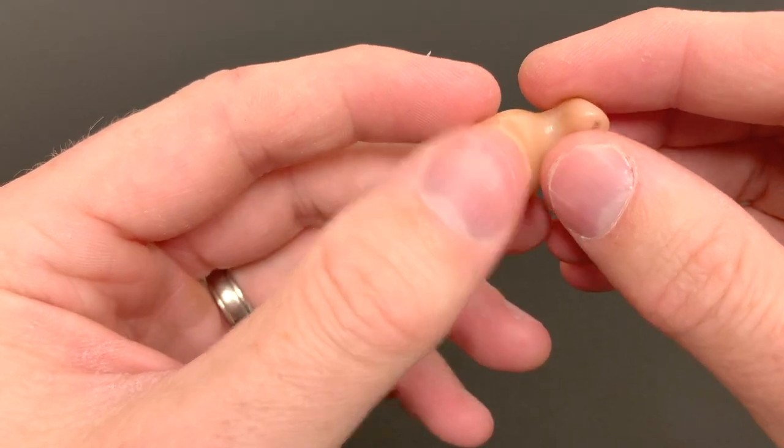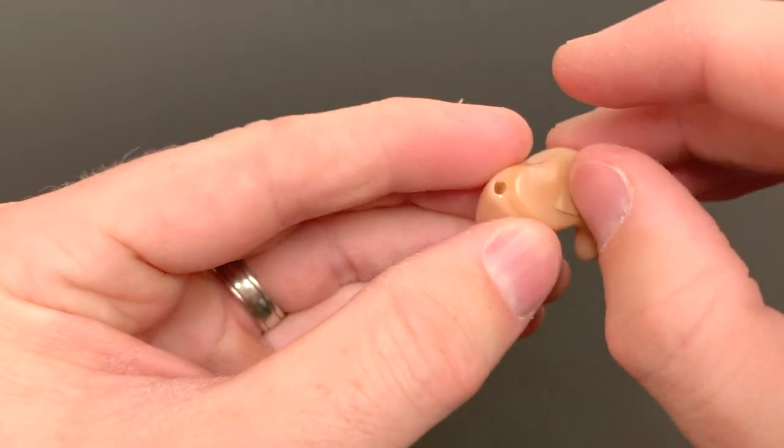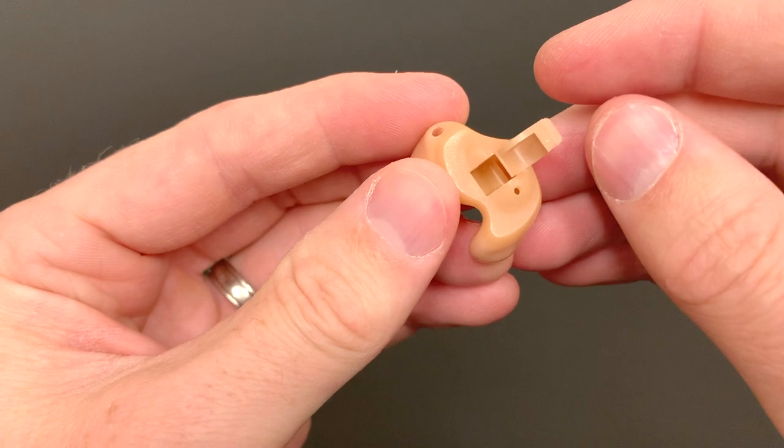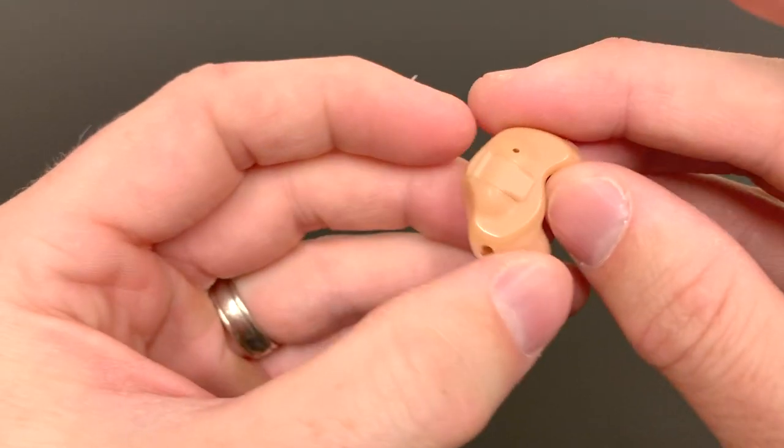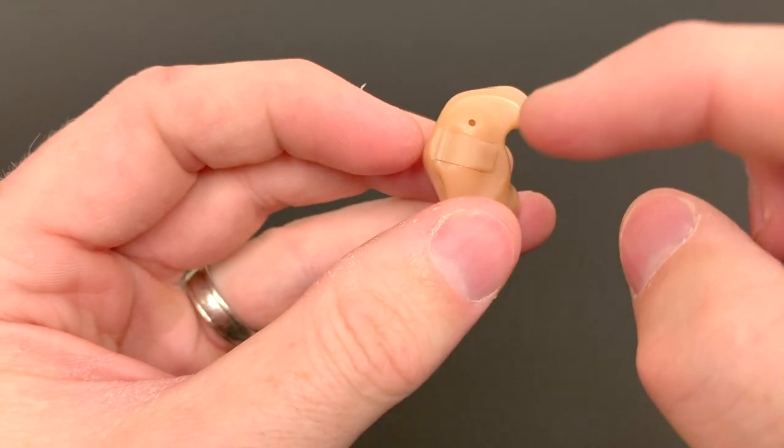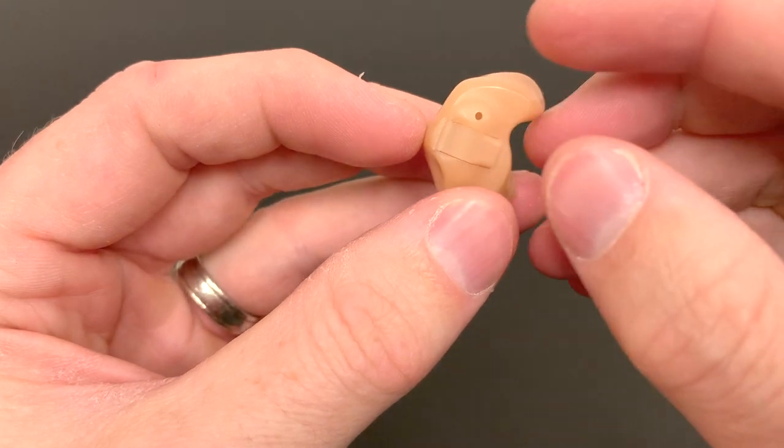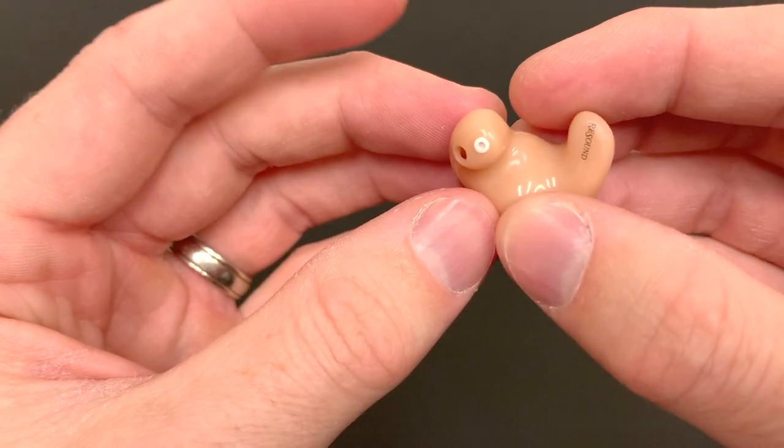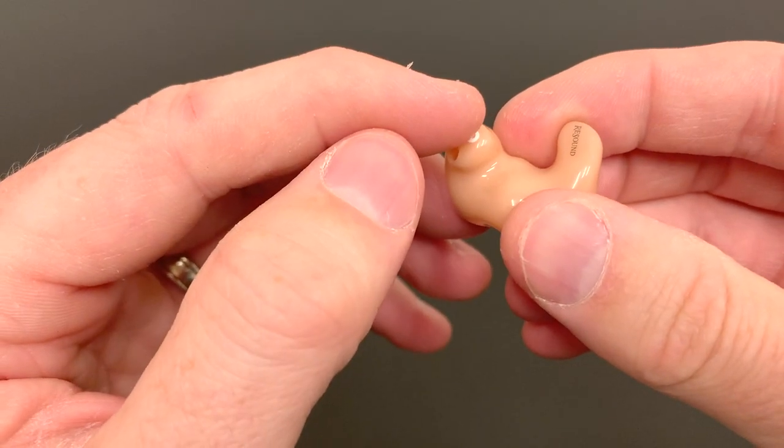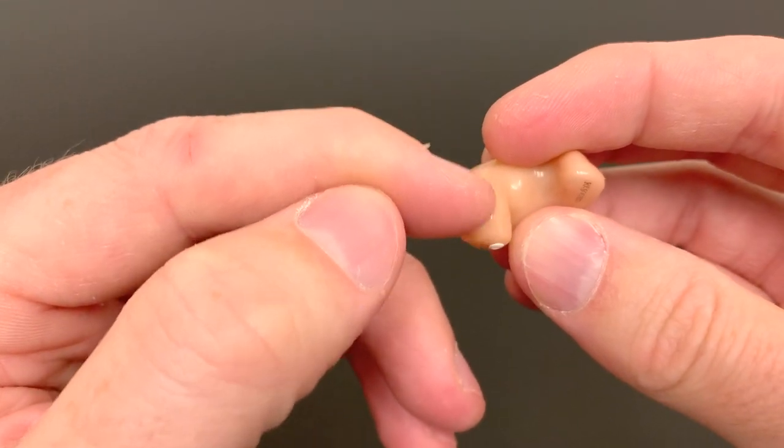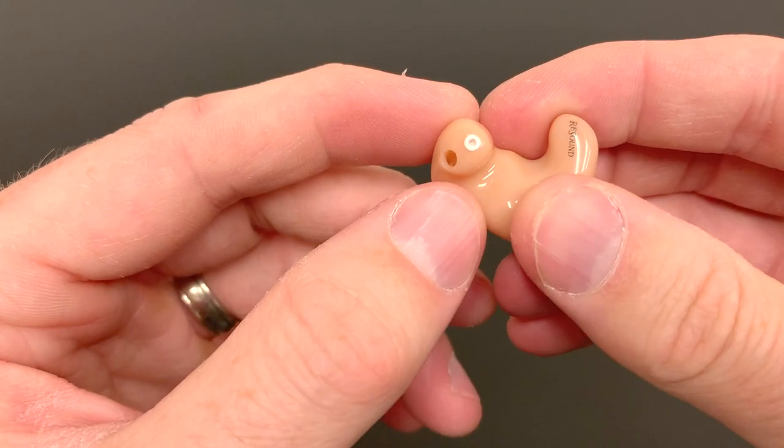This style of hearing aid has the battery door on the outside here that opens that way. Your microphone port, where the microphone lives, is here at the front. And if we turn the hearing aid over, you'll see again, there's that wax guard and the receiver or the speaker unit is inside the hearing aid here.